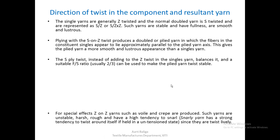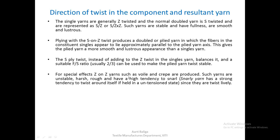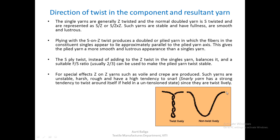For special effects, Z-over-Z is sometimes used — for example in crepe production. Such yarns are unstable, harsh, rough, and have a high tendency to snarl. Snarling means the yarn has a strong tendency to twist around itself when held in an unrestrained state, indicating high twist liveliness. The degree of snarling can be measured by counting the number of twists the yarn takes — the higher the count, the greater the snarling tendency. Such yarns are made for special applications like boiled and crepe fabrics.